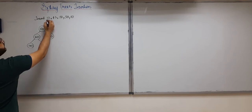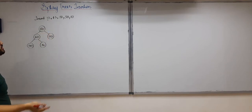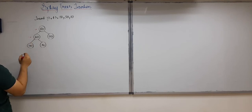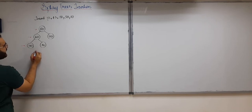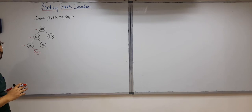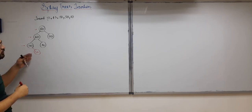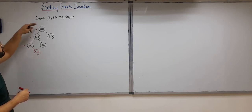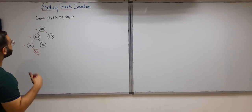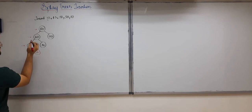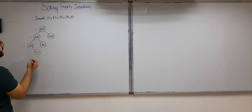First, let us insert 55. We start at the root: 55 is less than 80 so we go left; 55 is less than 60 so we go left of 60; 55 is greater than 50 so we go right of 50, and here we insert 55. This is how insertion works in a binary search tree, but after that we also need to perform splaying — 55 has to be brought to the root.